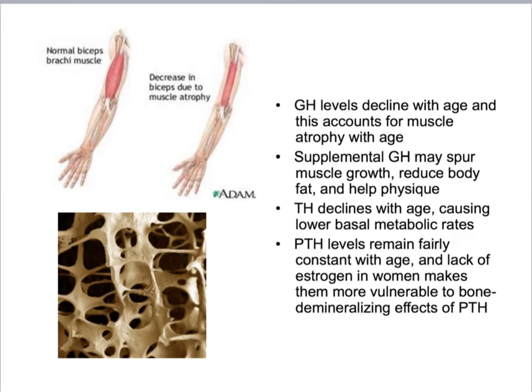Growth hormone levels also decline with age, which accounts for the fact that older people tend to have less muscle mass. Supplemental growth hormone may spur muscle growth, reduce body fat, and help the physique. Thyroid hormone also declines with age, causing lower basal metabolic rates. Parathyroid hormone levels remain fairly constant throughout age, but the lack of estrogen in women makes them more vulnerable to the bone-demineralizing effects of parathyroid hormone. Getting more exercise as an older person can help offset some of these problems.